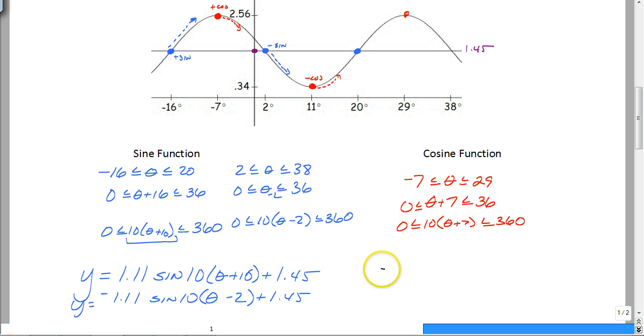That work doesn't change. So your final answer would just be y is equal to 1.11, and that's going to be a cosine this time of 10 times, this is theta plus 7, and then your plus 1.45. So, again, everything is the same except for this little number right here, and it all depends on whether or not you choose to do a positive or negative sine or cosine.